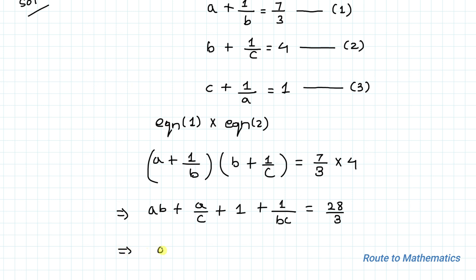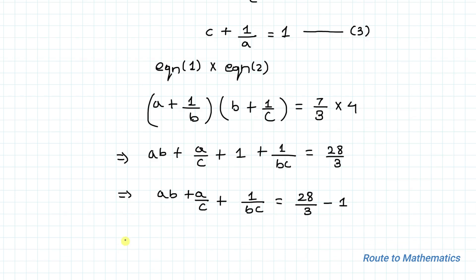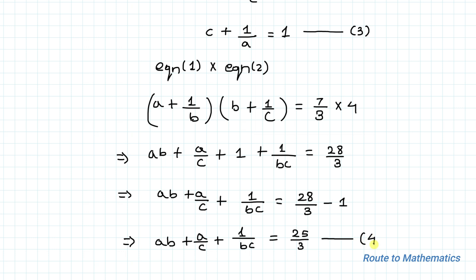In the next step, we take the 1 to the right-hand side: ab + a/c + 1/(bc) = 28/3 − 1 = 25/3. Let's call this Equation 4.